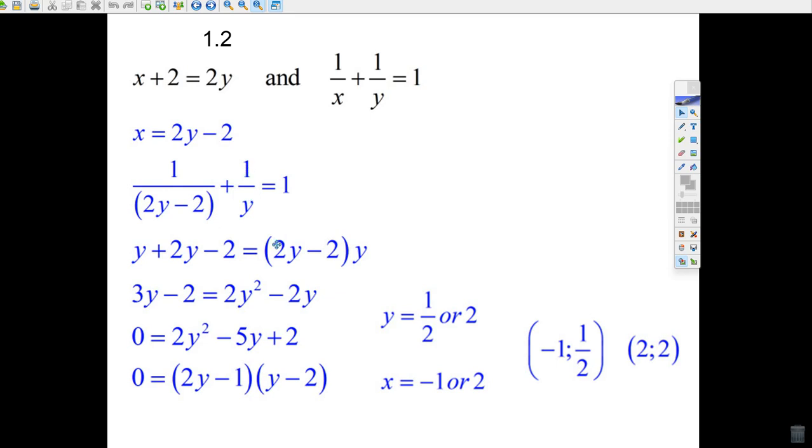And if you multiply 1 over y by this, the y's cancel, and you're just left with 2y minus 2. Now multiply this out, 2y squared minus 2y, add 2, subtract 3y, minus 2y minus 3y is minus 5y.